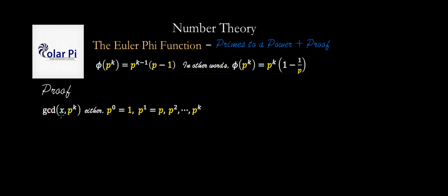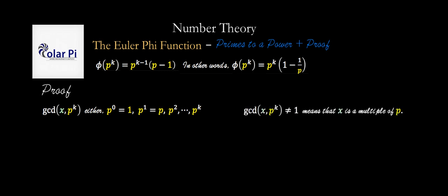So if an integer x has a greatest common divisor with p to the k, then it must be one of those factors, because the only factors of p to the k are those powers of p. Notice that the greatest common divisor of x and p to the k not being one means that x is a multiple of p.